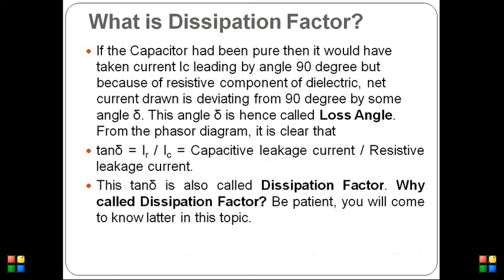We will calculate the loss angle. The value of the loss angle for a practical capacitor is very small — you can say 2 to 5 degrees. And this tan delta is called the dissipation factor. I will explain why it is called dissipation factor in the next slide.